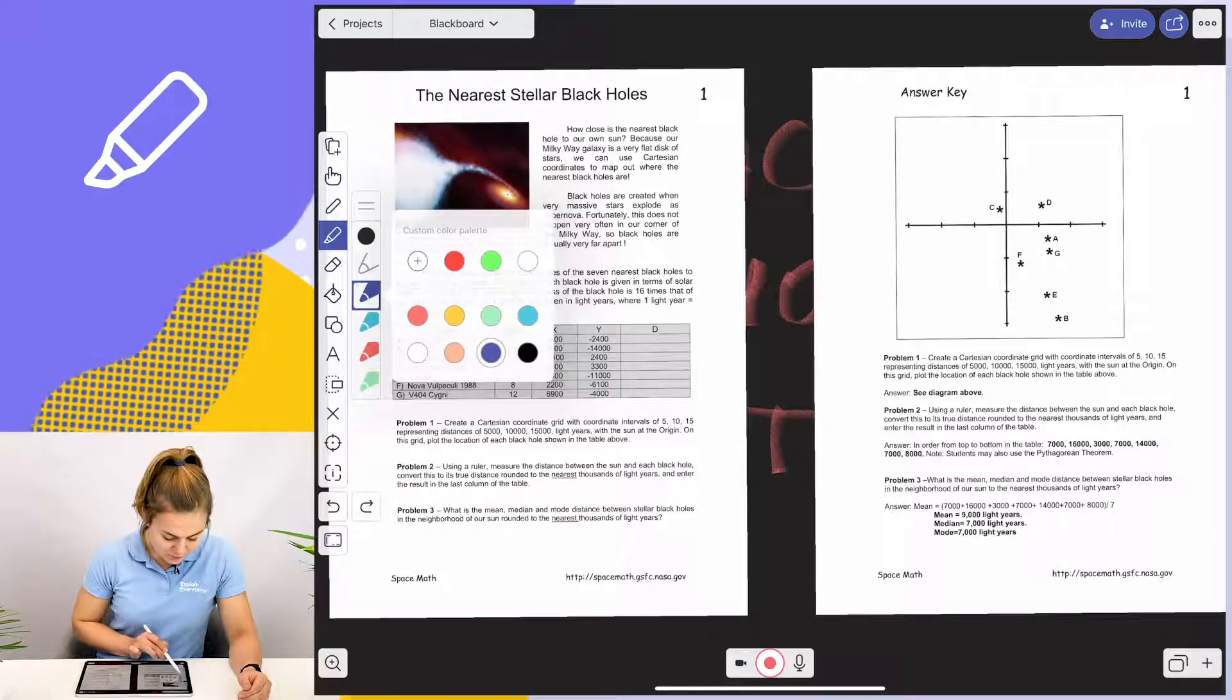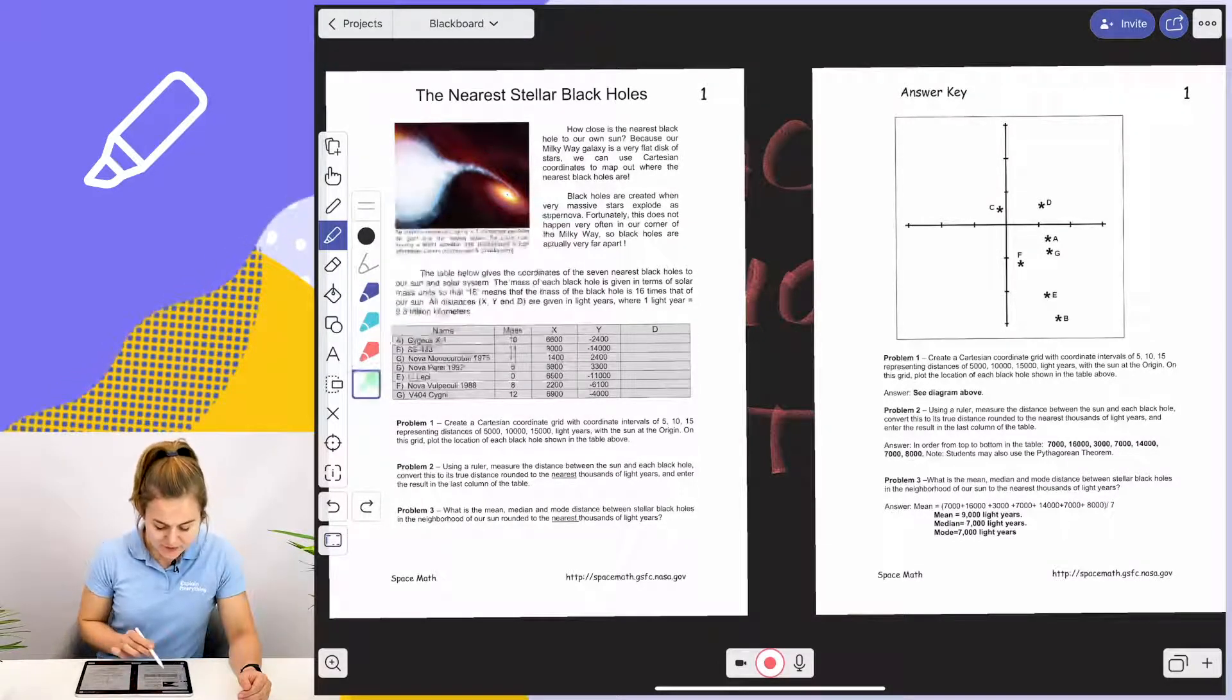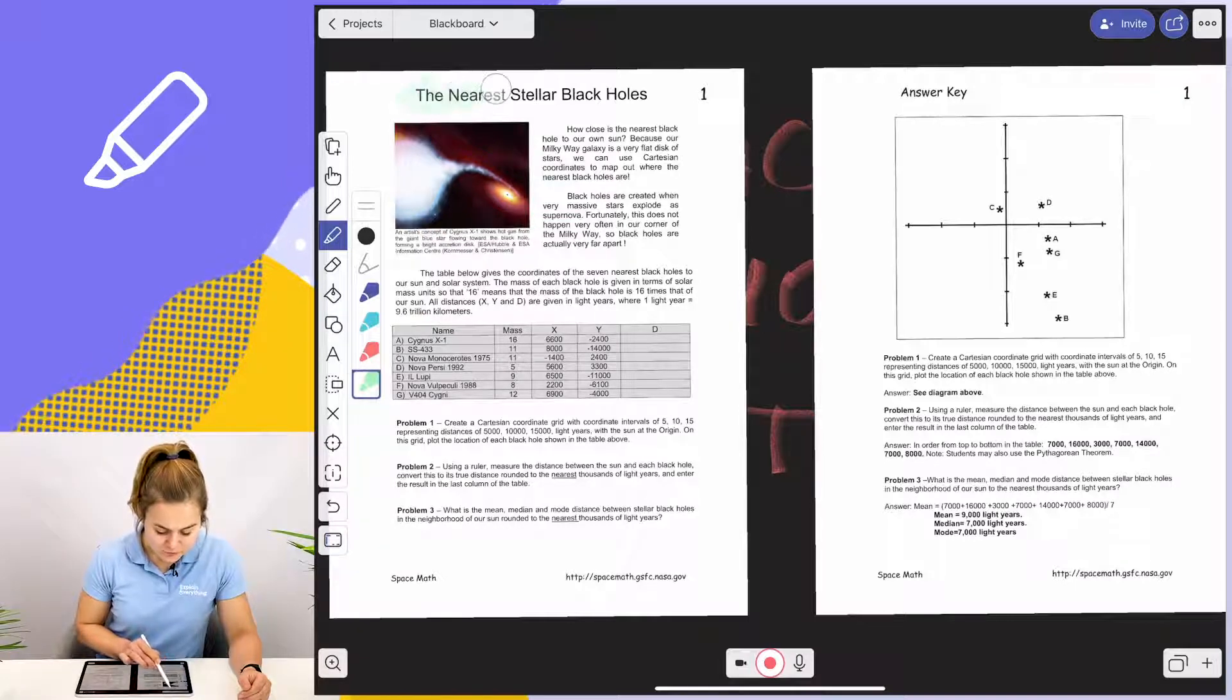I'm going to start off with the green highlighter and tell my students about the topic of the lesson, which is the nearest stellar black holes.